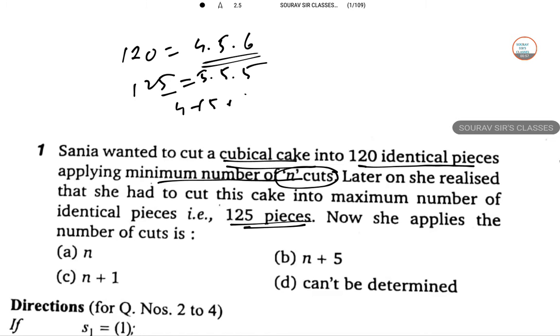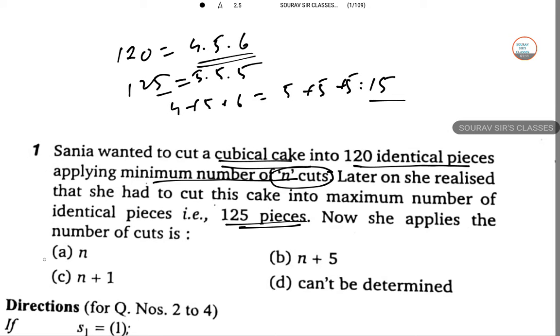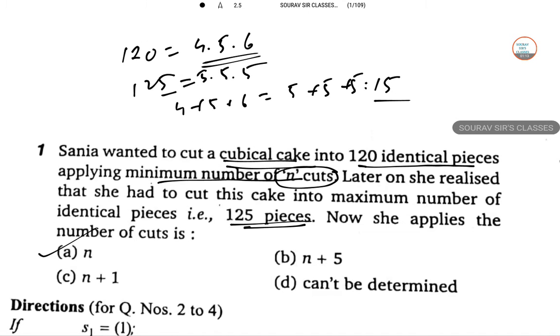But since 4 plus 5 plus 6 is equal to 5 plus 5 plus 5, both are 15. So hence the same number of cuts are required as previously. Hence N number of cuts will be required for this 125 cases also. So N is the answer.